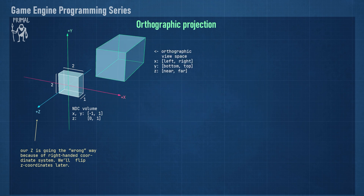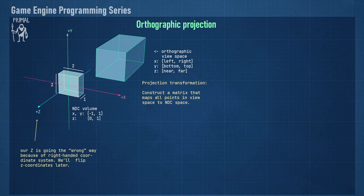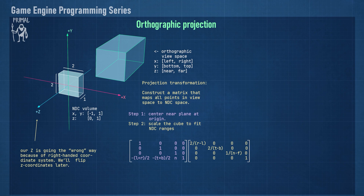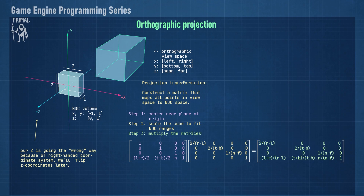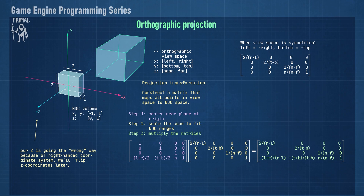Now consider the orthographic view space — it's also a box, however in general it has much larger dimensions. The orthographic projection boils down to fitting the view box into the NDC box, and because of their similar shape, it's easy to see that it can be done using a translation and a scale matrix. Step 1 is to move this box and center its near plane so that it coincides with the front of the NDC box. Step 2 is to divide each side by its width, height, and depth so it has the same size as the NDC box. Note that the near and far plane are reversed to get a negative depth because of the reverse direction of the Z axis. The last step is to multiply these two matrices to get the orthographic projection matrix. This matrix can be simplified for symmetrical view spaces where translation in X and Y direction is not needed.